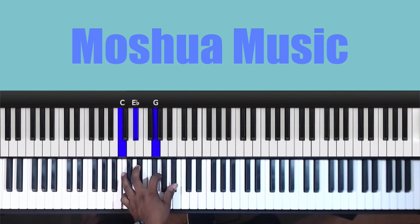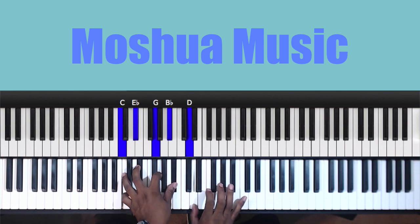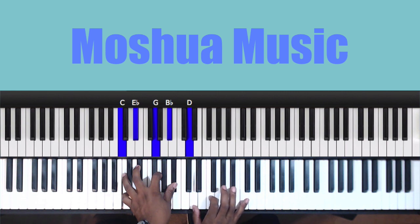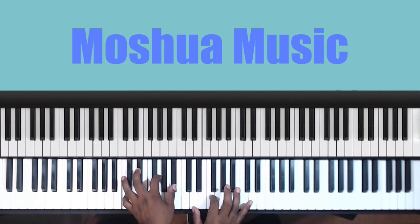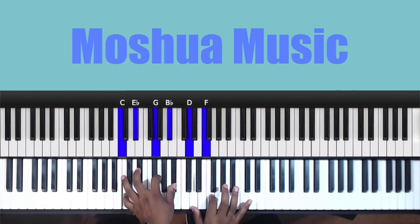Minor 7 would be that, add that B flat. The D will be the 9, and the F will be the 11. So that is the C minor 11 chord in its root position.